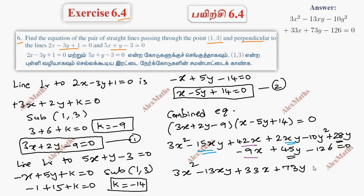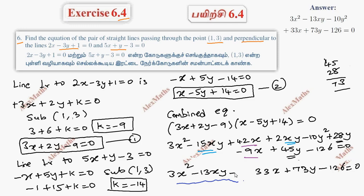So the final answer is 3x square minus 13xy minus 10y square plus 33x plus 73y minus 126 equals 0.